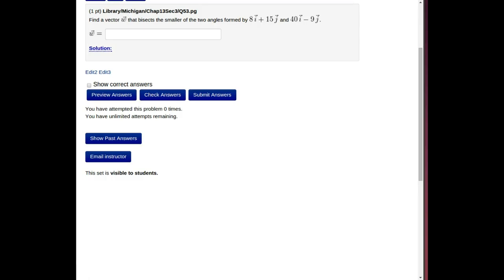Here's an interesting web work problem. We want to find a vector that bisects the angle between two other vectors.